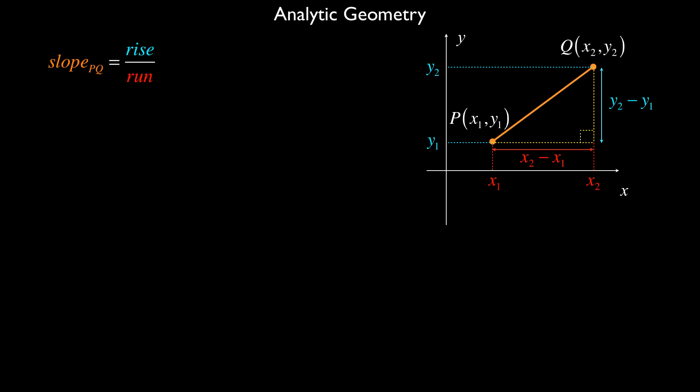And so we say slope PQ is rise divided by run. Substituting for the sides that we have marked in blue and red, the rise is y2 minus y1 and the run is x2 subtract x1. And so we have the slope of PQ, which we call m, mpq is y2 minus y1 over x2 minus x1.